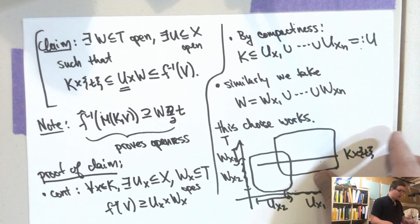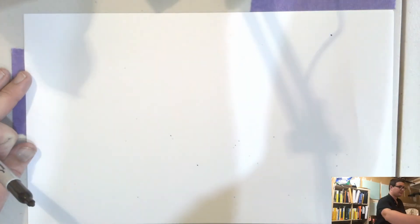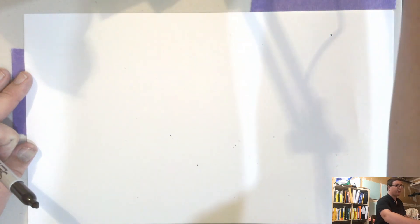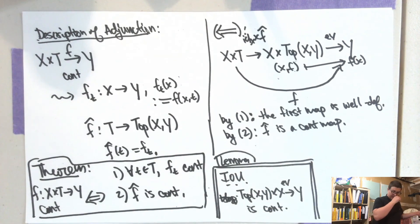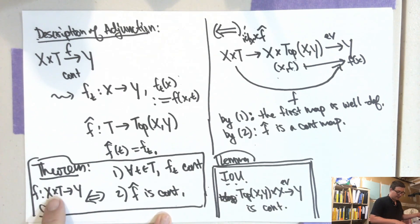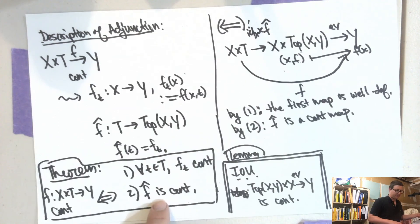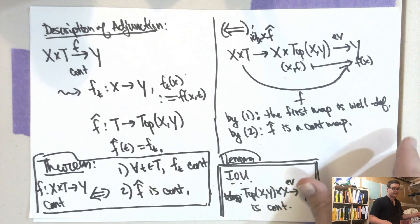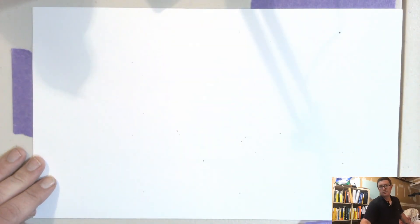So to summarize what we proved: assuming the IOU (that the evaluation map is continuous), continuity of a map from the product X cross T to Y is equivalent to all slices being continuous and the map to the mapping space being continuous. I'll see you next time.